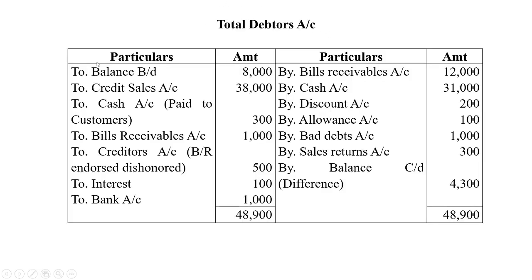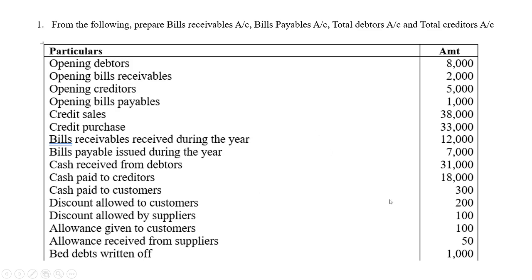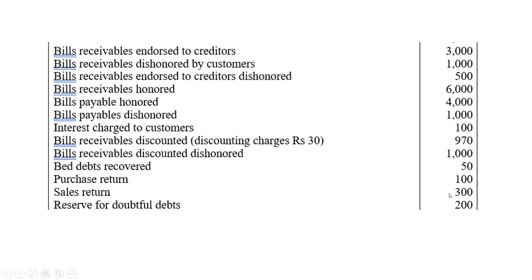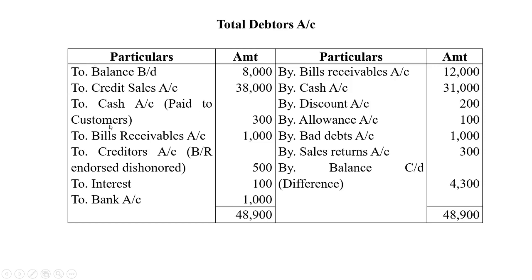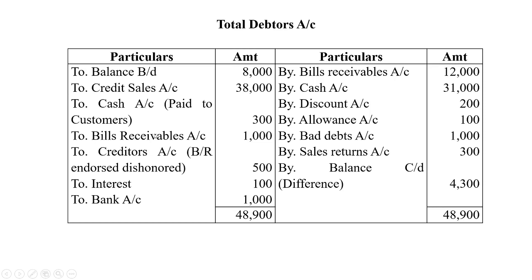For the total debtors account: opening balance — balance brought down — 8,000 rupees. Credit sales added: 38,000 rupees. On the credit side, cash paid to customers — 300 rupees; bills receivable account — 1,000 rupees. Bills receivable dishonored entry added to the debit side — 1,000 rupees.